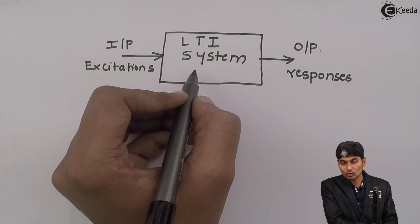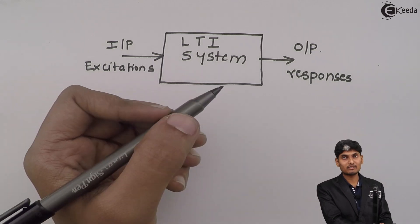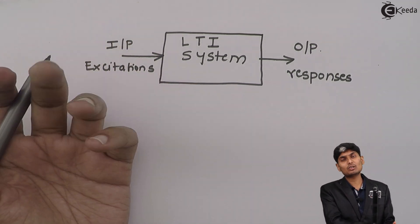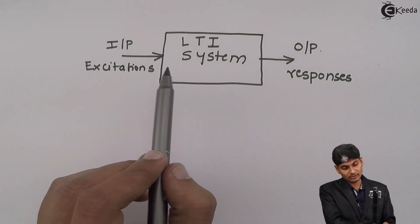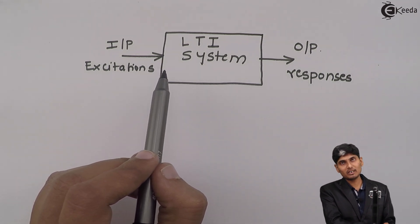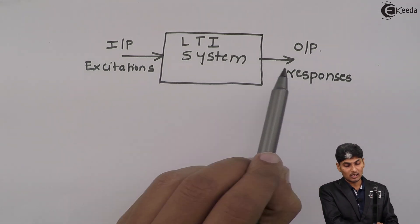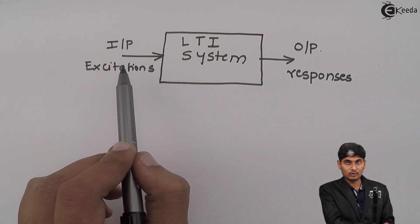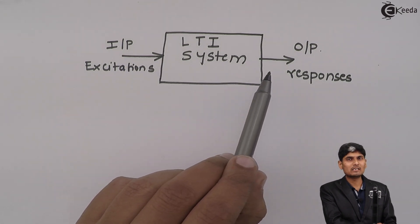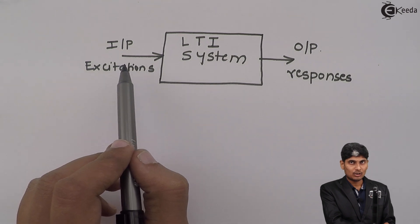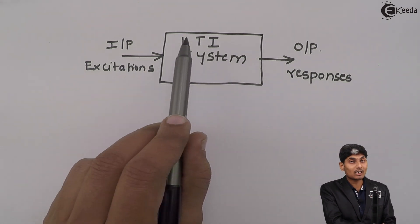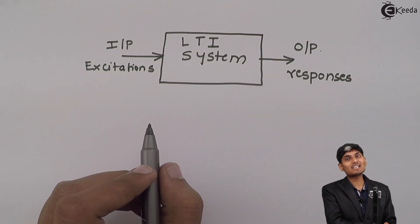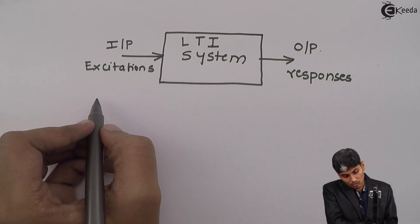If I don't know what a system is — whether it is an amplifier, a filter, an attenuator, or a storage element like a capacitor or inductor — I will give a known input. If it is an attenuator, the output will be reduced; if it is an amplifier, the output will be amplified. So by giving a known input and observing the output, I can characterize what type of system it is.